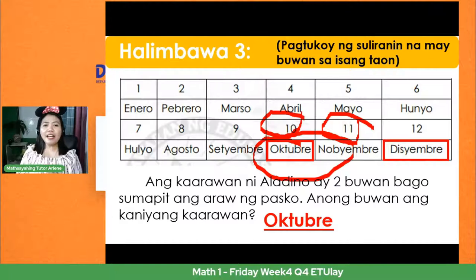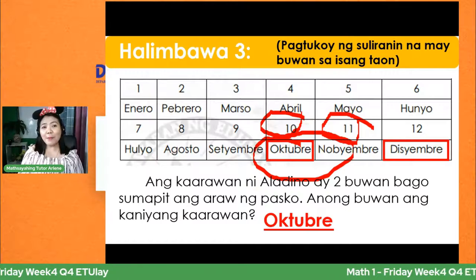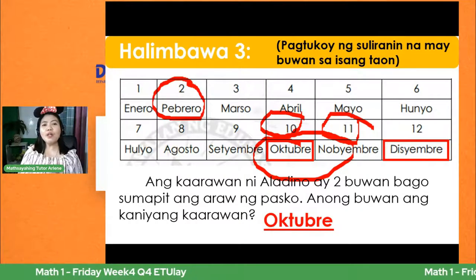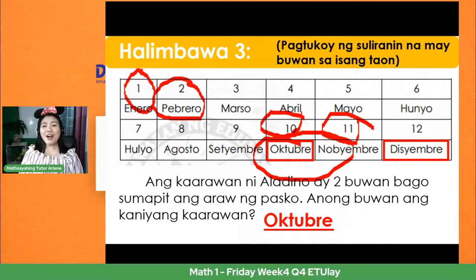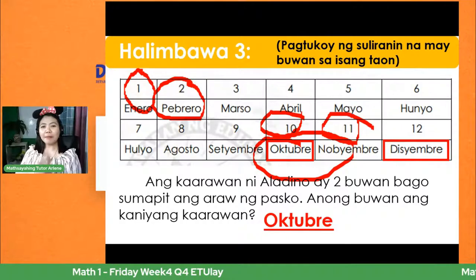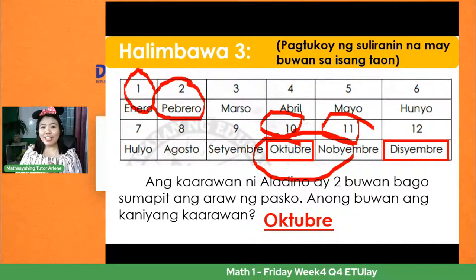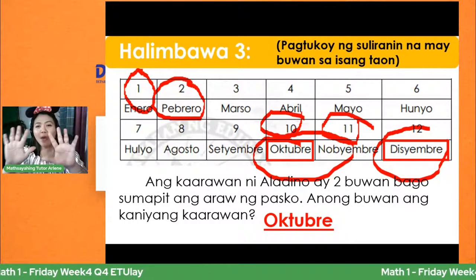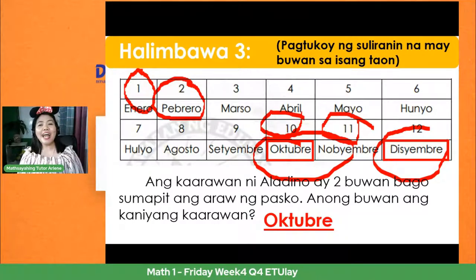Anong buwan nga natin pinagdiriwang ang araw ng mga puso? Araw ng mga puso ay tuwing Pebrero — tama! Ano ang unang buwan ng taon? Kung ang sagot mo ay Enero, magaling. Anong ang huling buwan ng isang taon? Kung ang sagot mo ay Disyembre, magaling. Tandaan natin, mayroon tayong 12 months in a year — para ready tayo sa susunod nating gawain.